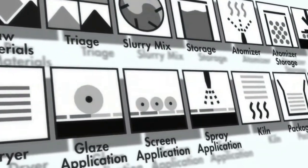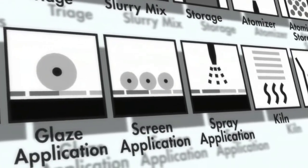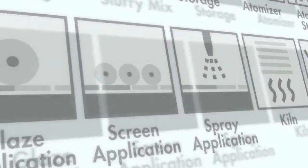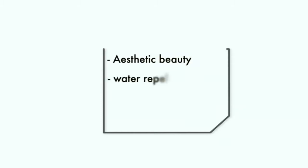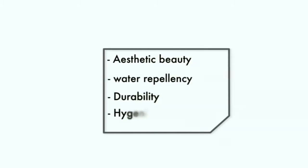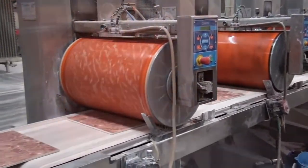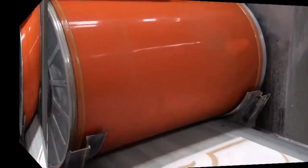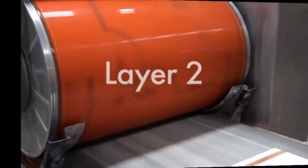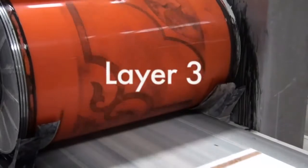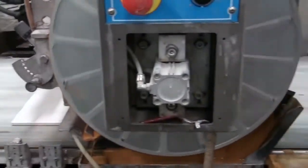Glazing and screening serve both a practical and artistic purpose. They form an important part of the finished product because they provide aesthetic beauty, water repellency, durability, and hygienic properties to the tile. Roller screens are commonly used to apply design and color layer by layer to the bisque of the tile. Greater design variation can be achieved by adding roller screens to the line.